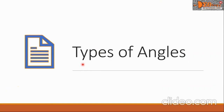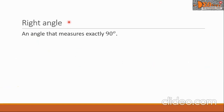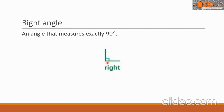Hi everyone, today we're going to study types of angles. Let's start with the right angle. It is an angle that measures exactly 90 degrees. Here is a picture of a right angle. There is a special symbol that denotes a right angle — that small square on the corner means this angle is 90 degrees.